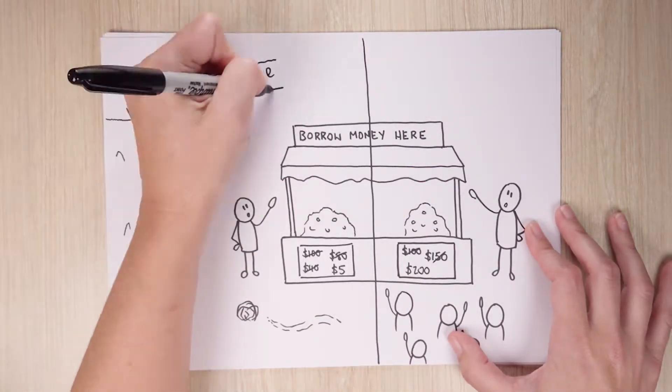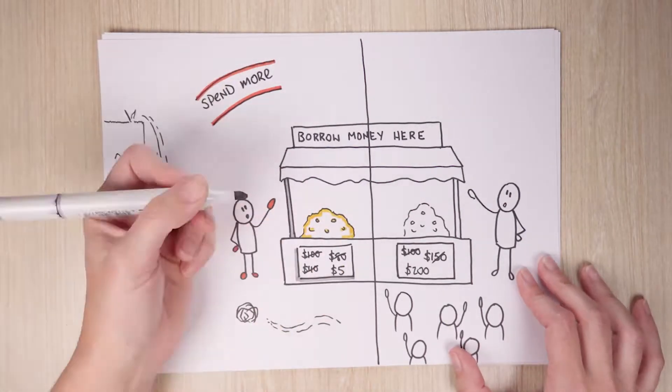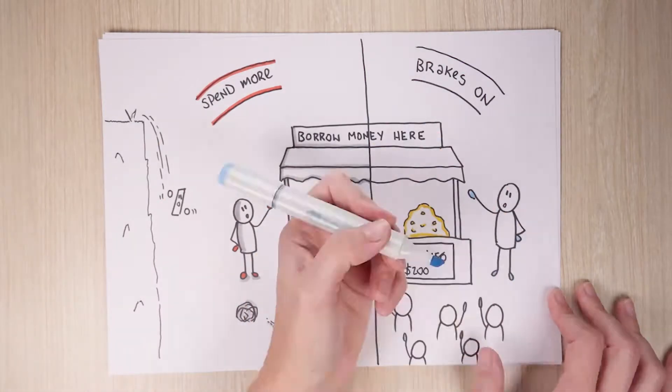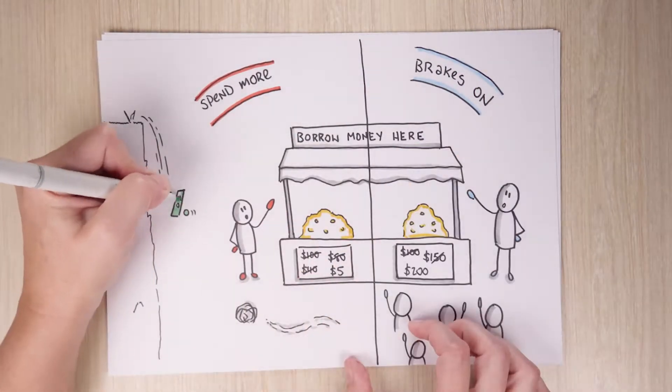Lower rates often encourage people and businesses to spend money, stimulating the economy in the process. Higher rates tend to have the opposite effect. They put the brakes on spending and this is where the central bank comes in.